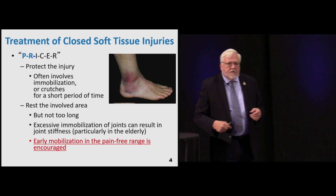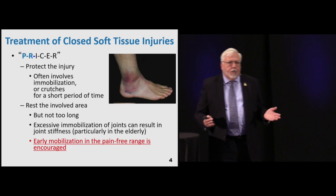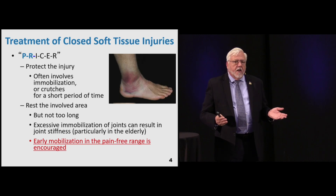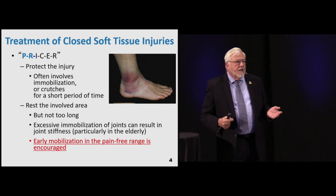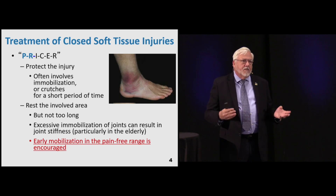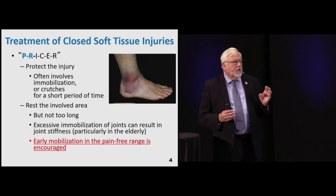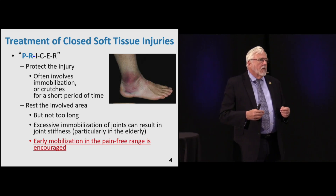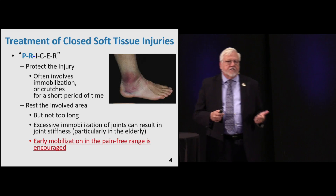When talking about closed soft tissue injuries, we're going to use the mnemonic PRICER. The first thing is we need to protect the injury at all costs - this often involves immobilization. In the old days we used to cast people and put them in splints for weeks, but we found that caused more harm than good. We want to immobilize for the shortest period of time using splints or crutches, then get them up and moving fairly quickly. The R is to rest the involved area.